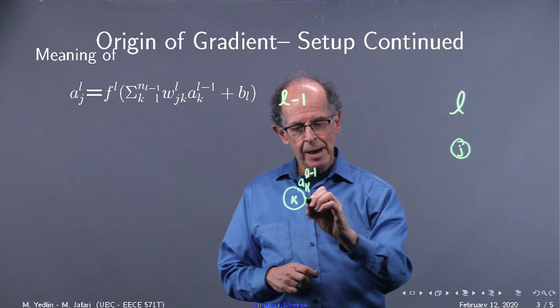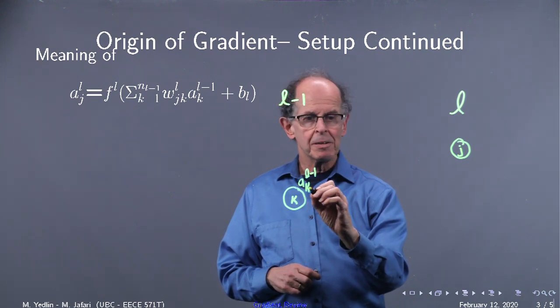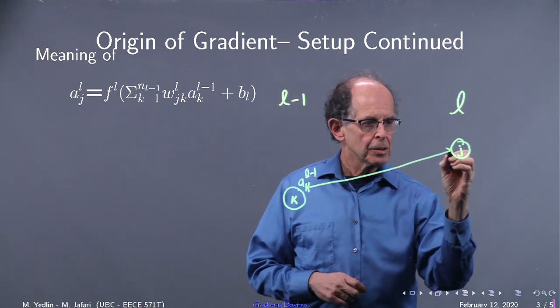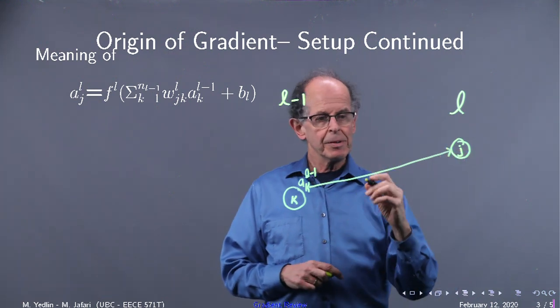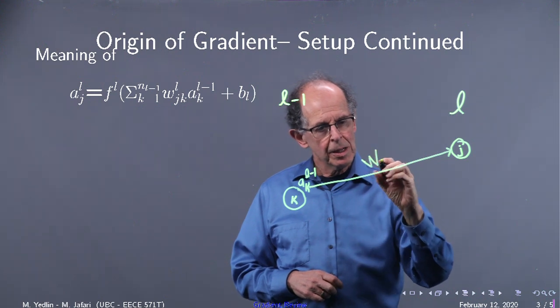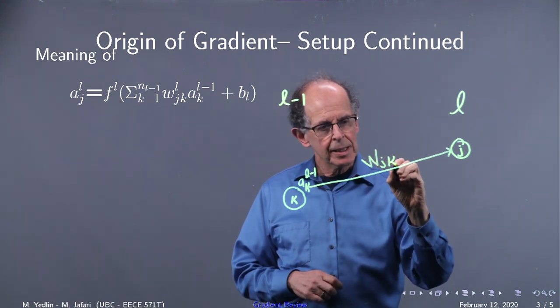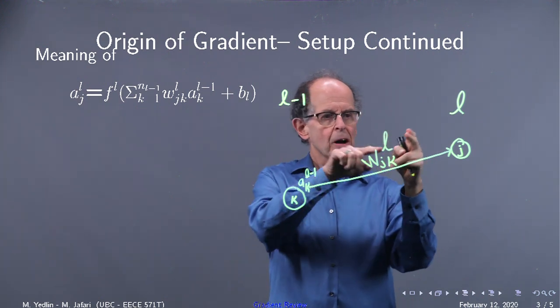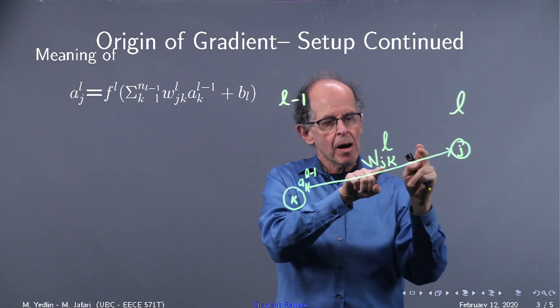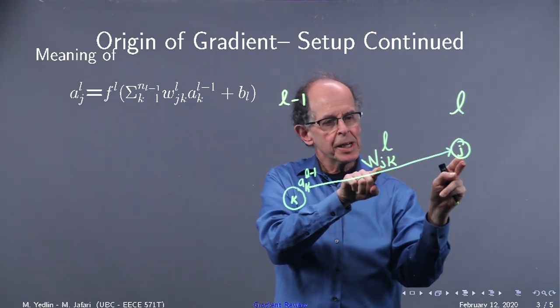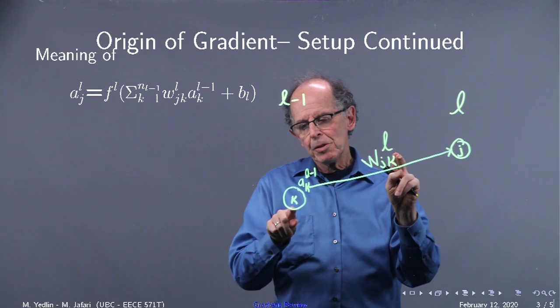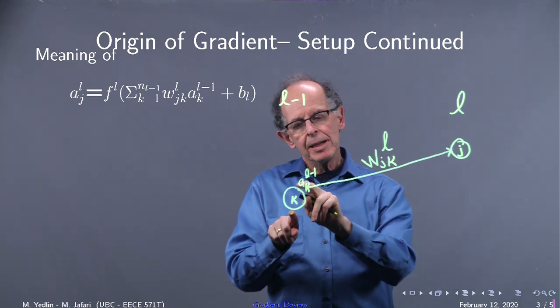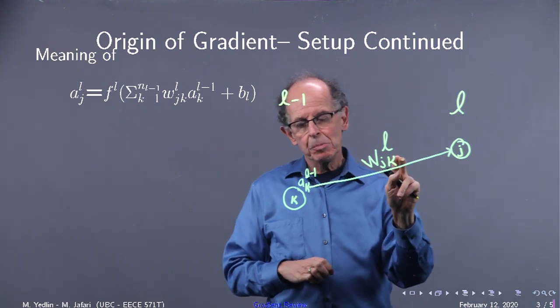So what happens? We have the transmission of ak of l minus one to neuron j in the lth layer, and the weight here is wjk superscript l. So l says our target layer is the lth layer, our target neuron is j in the lth layer, and our neuron delivering this weight on the activation here is indexed by k.